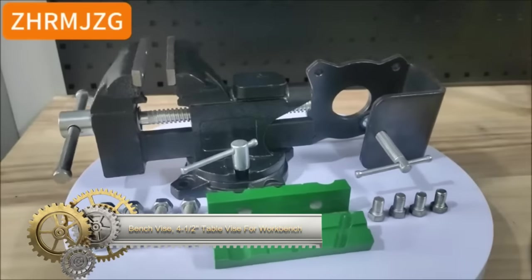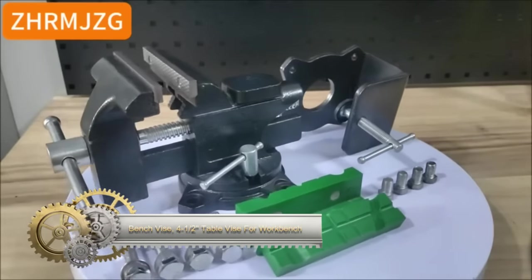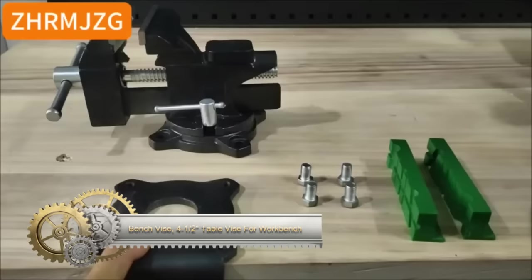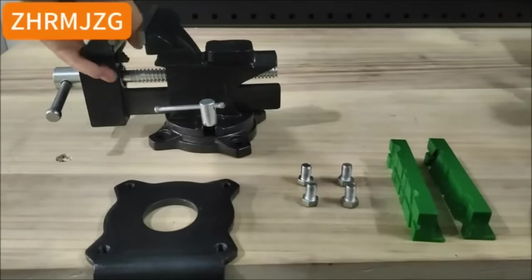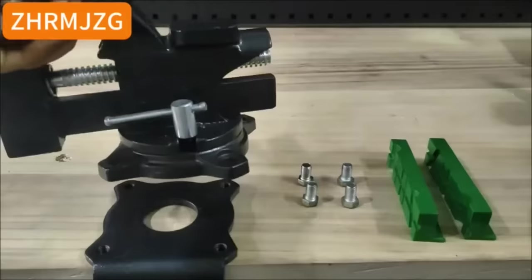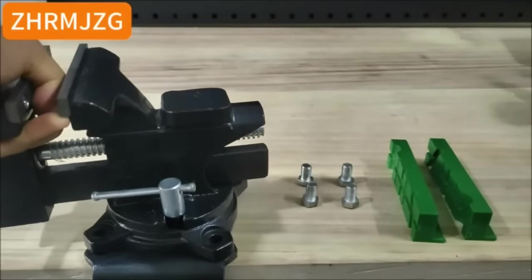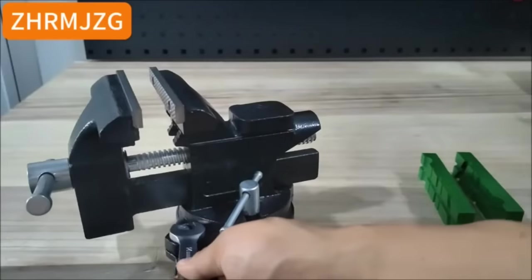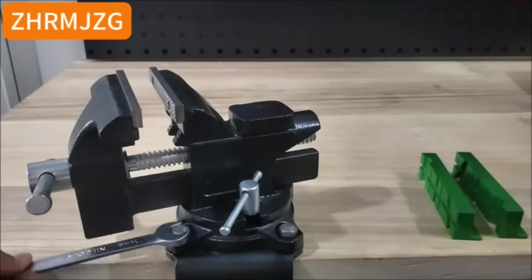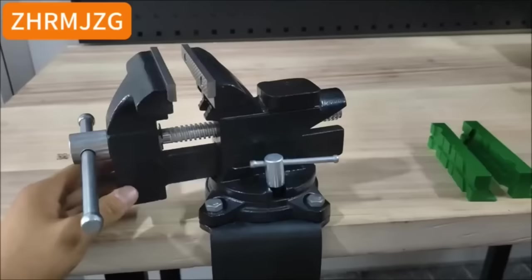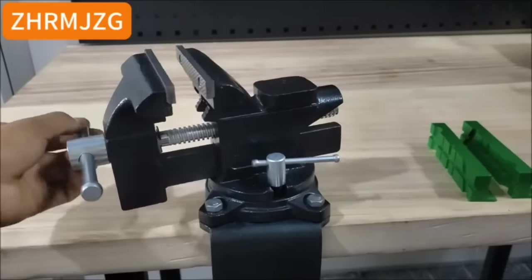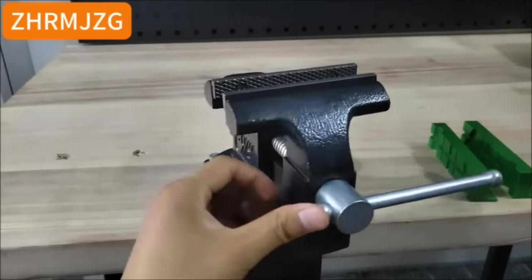The bench vise with its 4.5-inch jaw opening and a 270-degree swivel base is a versatile and durable tool suitable for woodworking, metalworking, welding, and DIY projects. This 2-in-1 bench vise comes with two sets of jaws, including soft jaws for delicate materials like wood and plastic, and hard jaws for tougher materials such as metal and pipe.